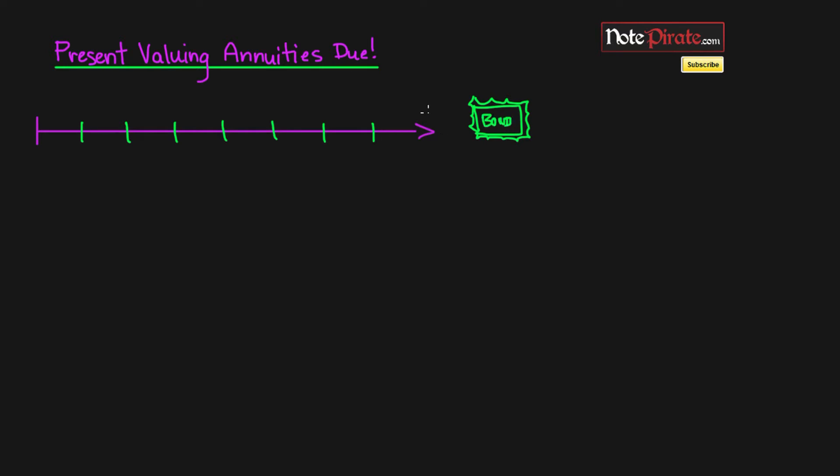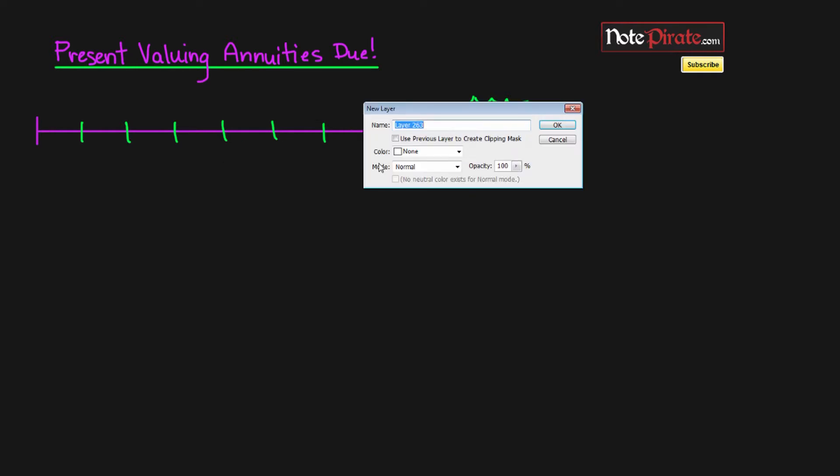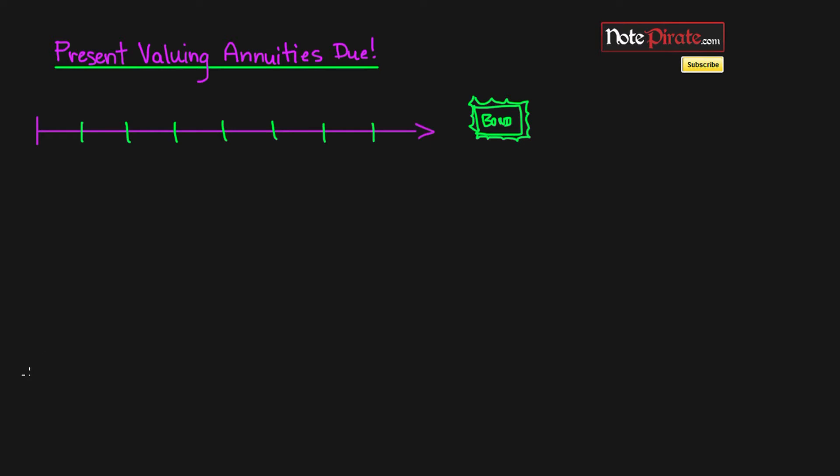Even though this kind of looks like a razor blade, I'm going to label it and say bond. The difference between an annuity and an annuity due is that instead of having cash flows at the end of each period, they're going to be at the beginning.